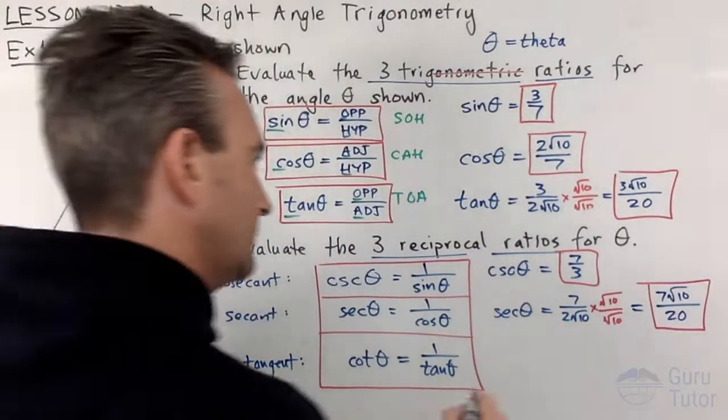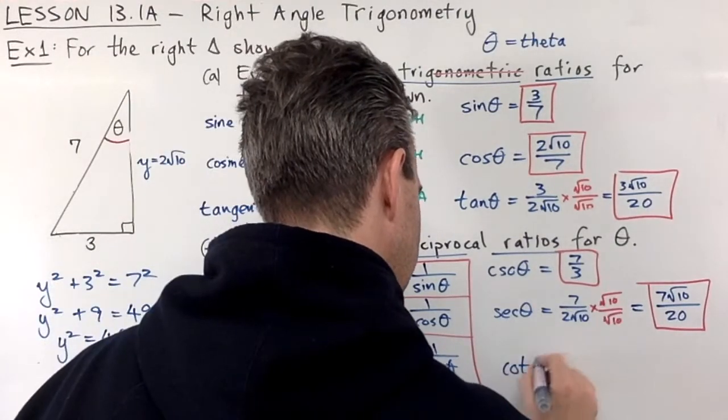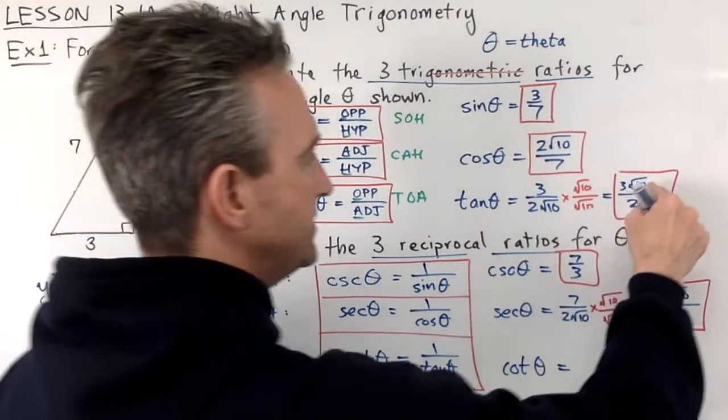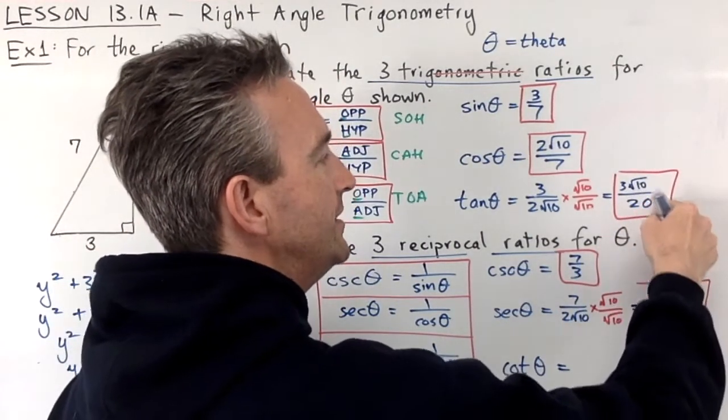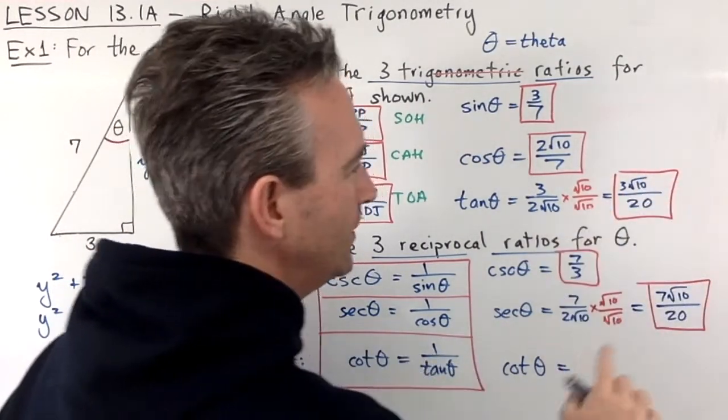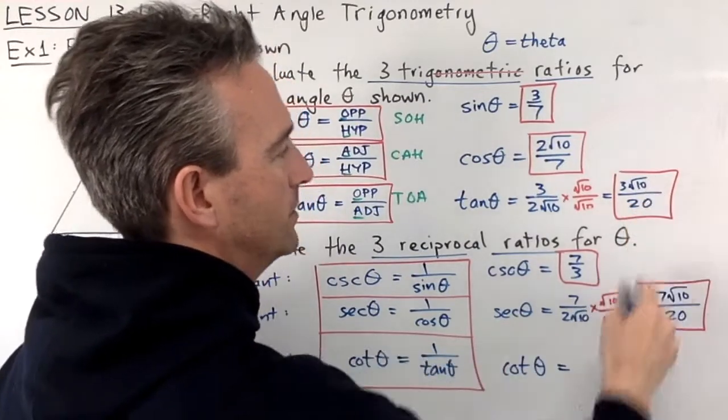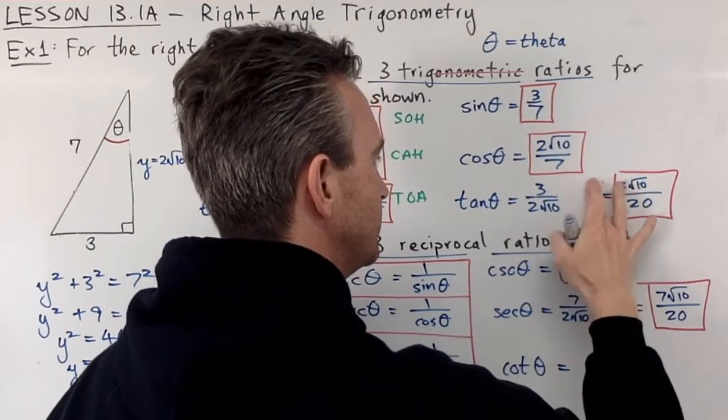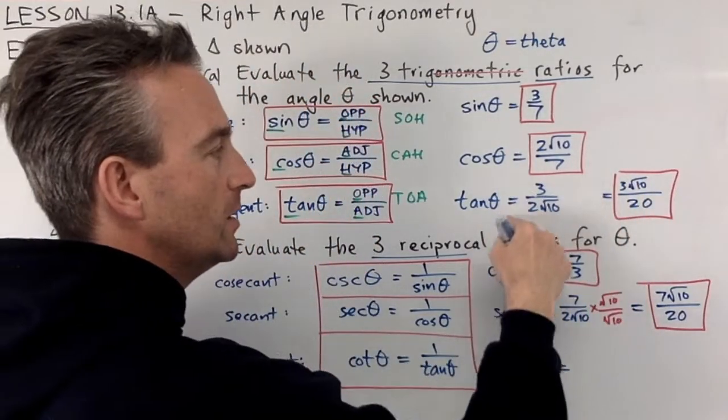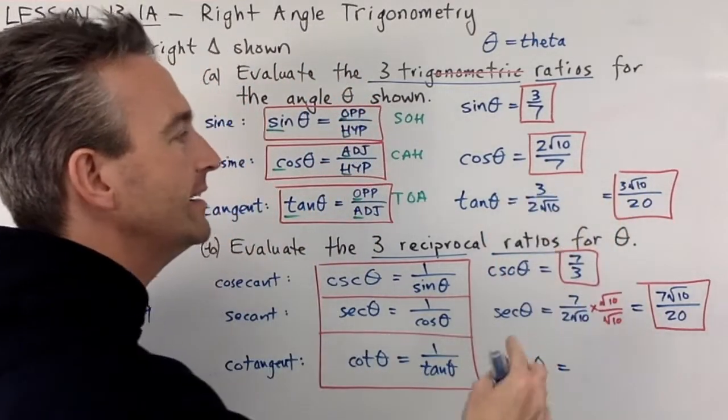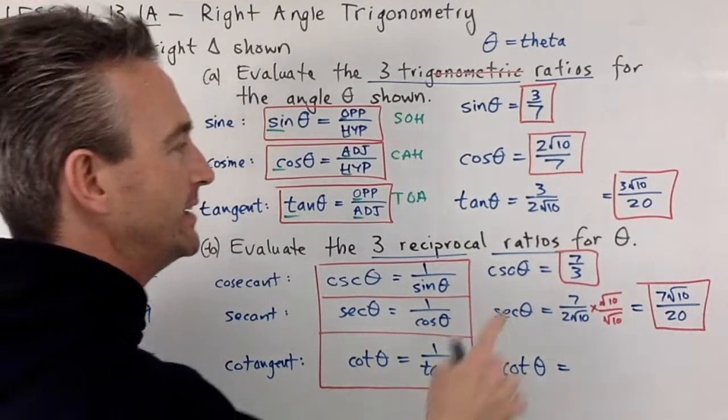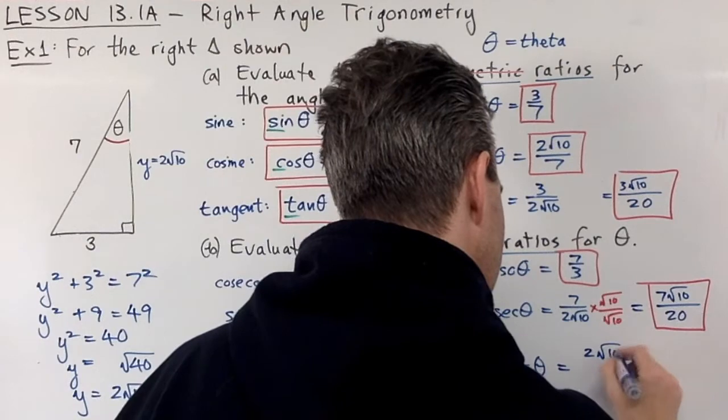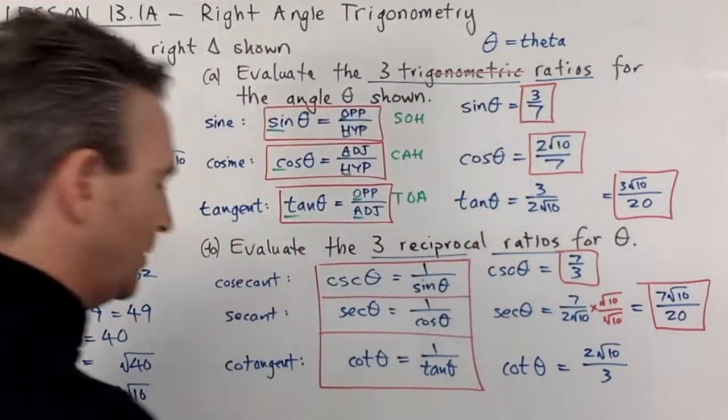And what about cot theta? Cot theta is 1 over tan theta. Here is tan theta, so it's this upside down. Which is—oh, that's annoying, we're going to get another radical on the bottom, but wait, stop. What was it before we did that? Remember our first answer for tan theta was this. If we just turn this upside down, then we don't have to deal with that breaking of the golden rule. It's going to be 2 root 10 over 3.